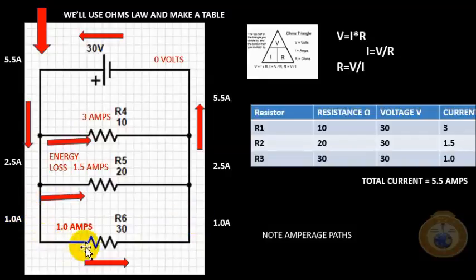Then we come back up. We're still 1 amp from here through the resistor or across the resistor and up here. As we cross this threshold, the 1.5 amps pile back on, giving us 2.5 amps in between this branch. As we pass here, the 3 amps come back on and we have 5.5 amps.